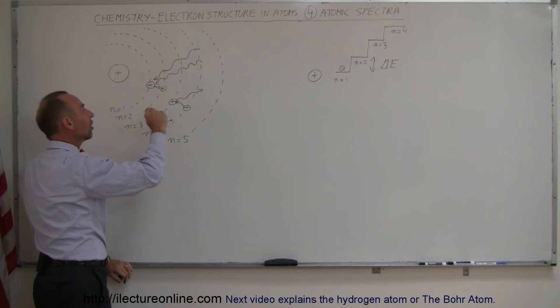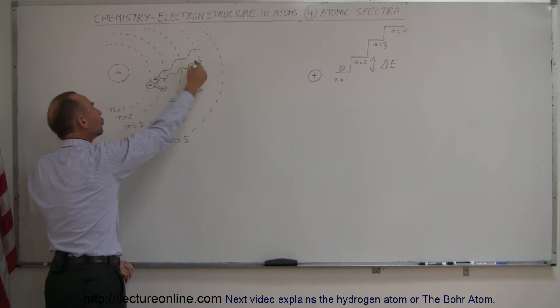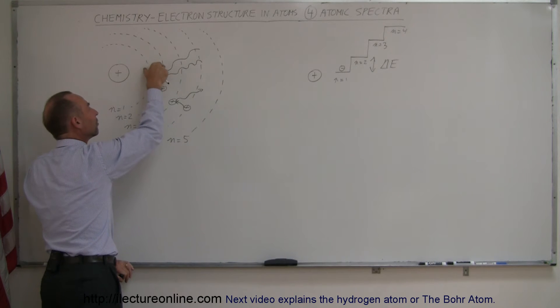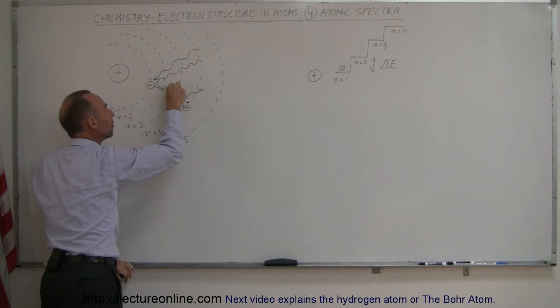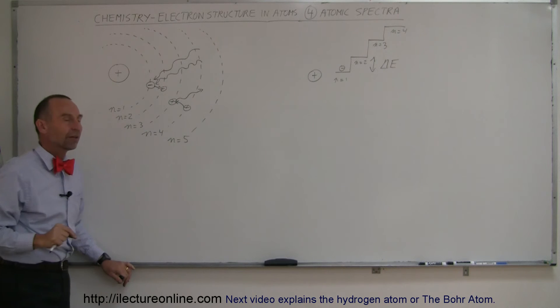So, the atomic spectra is such that when electrons absorb energy and the energy that can absorb is the exact same as the difference between any two levels, the electron can jump up. If electrons jump back down, they will give off exact same amount of energy that you find between these levels.